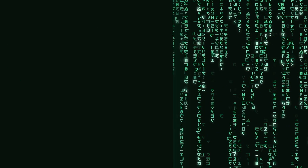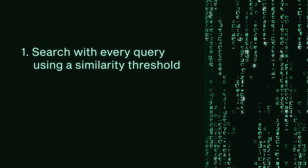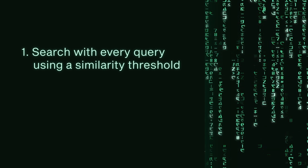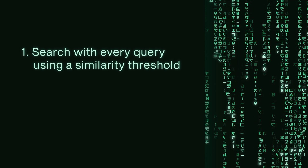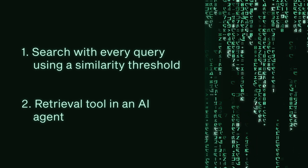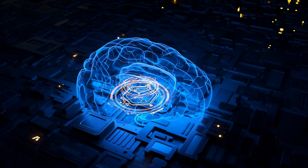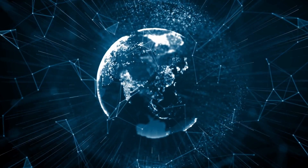So how can we make it an optional thing where we're not always querying our vector database? There are two options. The first option is you just set a similarity threshold — if a retrieved context is below that threshold, you just don't include it as added information in your query to the large language model. The second option, which is what we're going to talk about today, is actually using a retrieval tool as part of an AI agent.